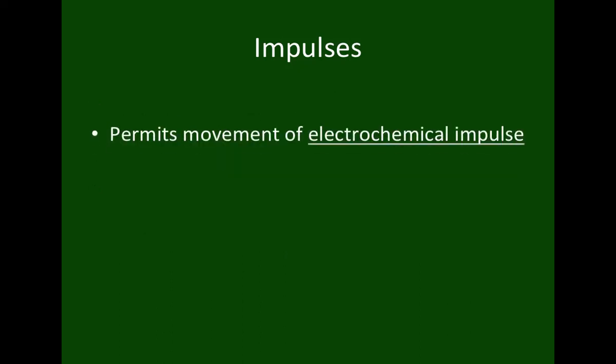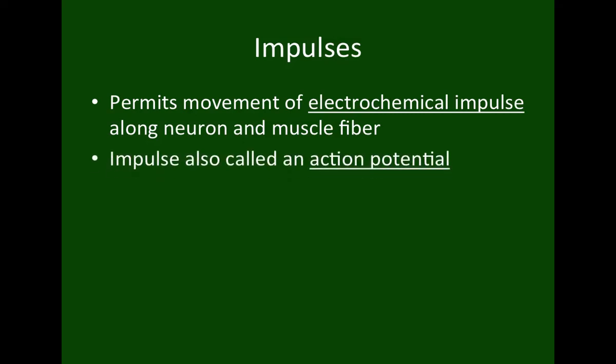This excitability within neurons permits the movement of an electrochemical impulse — a combination of electricity and chemical compounds. Sometimes we will refer to this impulse as an action potential as well.